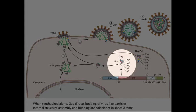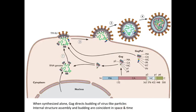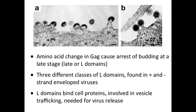Just this Gag protein — if you express that only in a cell, you will form particles. So that's an example of a virus where you don't need the glycoproteins; just these underlying proteins will drive budding.